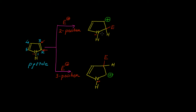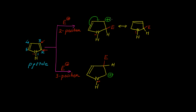When the electrophile is at position 2, we have a positive charge on carbon number 3. This positive charge gets delocalized with the pi electrons to give the next resonance structure. We have a carbon-carbon double bond, and on nitrogen we have hydrogen. The electrophile is on position 2, and we have a lone pair of electrons on this nitrogen.